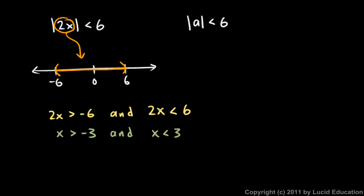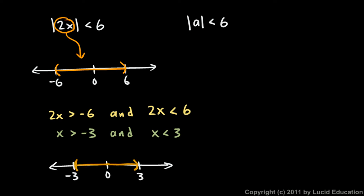I'm not trying to graph a solution set for 2x — I'm trying to graph a solution set for x. So my final answer will look like this: I have to have numbers greater than negative 3 and less than positive 3. Use parentheses, or an open circle if you're using the other notation. That indicates all the values from negative 3 to 3, not including negative 3 and 3. You could write it as: negative 3 is less than x is less than 3.